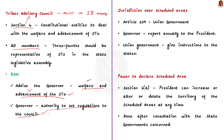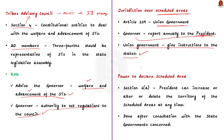According to Article 339 of the Indian Constitution, the union government has jurisdiction over the management of scheduled areas. However, both the center and the states have duties in the administration of scheduled areas. The governor of the state is required to report annually to the President about the management of scheduled areas, and the union government gives instructions to the states regarding administration of the scheduled areas.